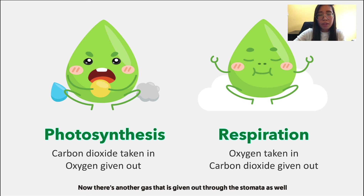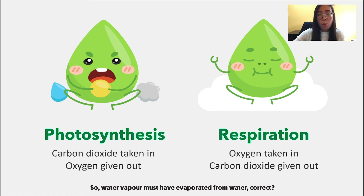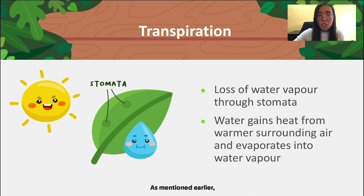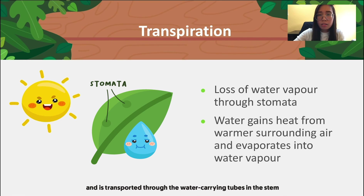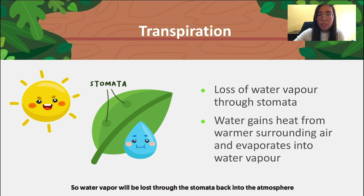Another gas given out through the stomata is water vapour. Water vapour did not come in through the stomata — it evaporated from water. That water was absorbed by the roots in the soil and transported through the water-carrying tubes in the stem and then to the leaves. At the stomata, water gains heat from the warmer surrounding air and evaporates into water vapour, which is then lost back into the atmosphere through the process of transpiration.